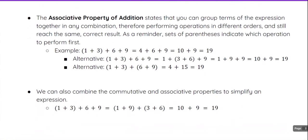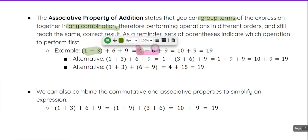The associative property of addition states that you can group terms of the expression together in any combination, performing operations in different orders and still reaching the same correct result. As a reminder, whenever we have parentheses in an expression, we evaluate that portion first. So with one plus three plus six plus nine, where one plus three is in parentheses, we evaluate one plus three first to get four, then four plus six gives us ten, then ten plus nine gives us 19.